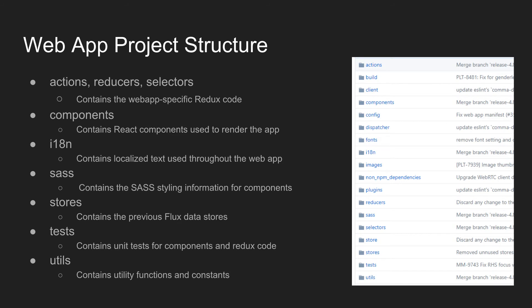So if you've got the web app now, there are a lot of different folders in it. If you take a look at the right there, you can see all of them — a lot of them probably aren't important for you. The most important ones are listed on the left. The actions, reducers, and selectors are all Redux-related. If you're not familiar with Redux, I'll speak a bit about that and give some helpful links later on.